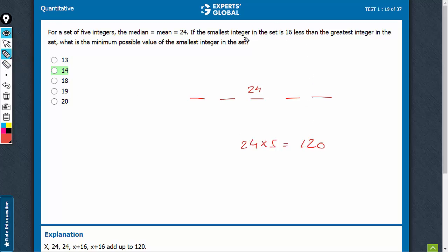And the smallest integer is 16 less than the greatest. So if this is x, this becomes x plus 16. The minimum possible value of the smallest integer means we have to minimize x.